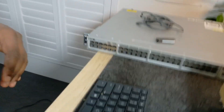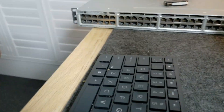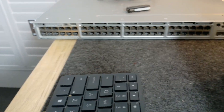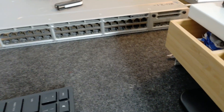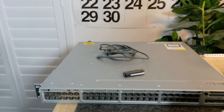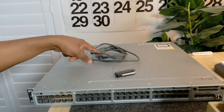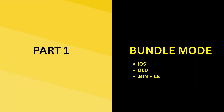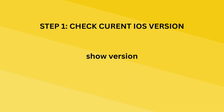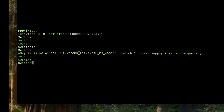The switch we're upgrading is a Cisco 3850, a 48-port switch. On top of the switch I have my console cable that I'm going to use for configuring, and I've got my USB which I'm going to use for copying the image from my laptop to the switch. The first step is to verify what version the switch is running, using the command 'show version'.